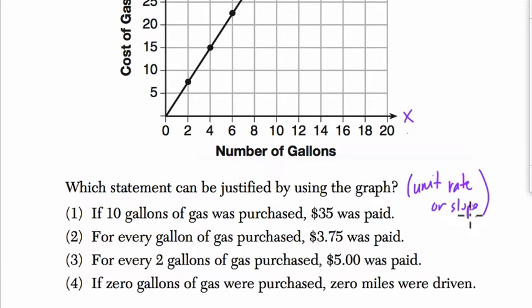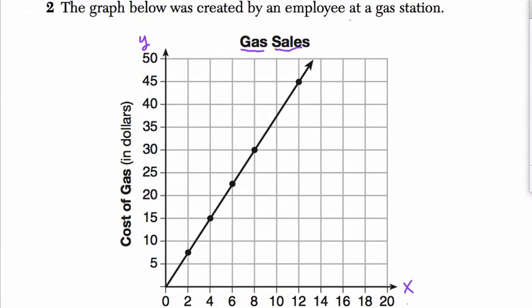So before I even read these questions, I'm going to actually go back to the graph and find the slope. So here's my graph. First thing you want to do is find some friendly points. This point right here is $4.15 and this point right here is $8.30.